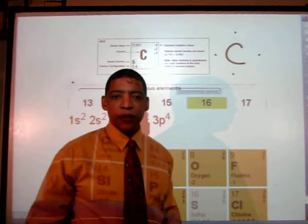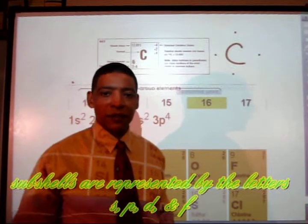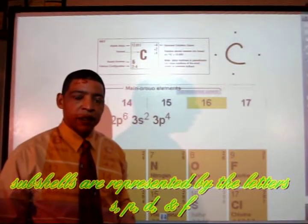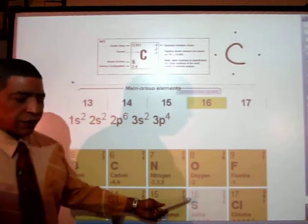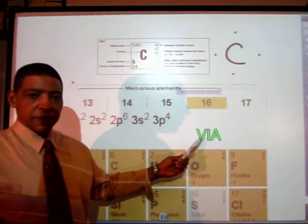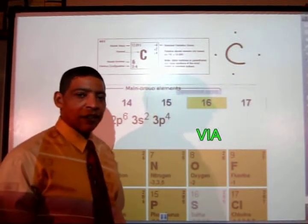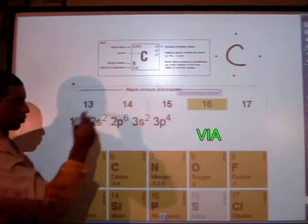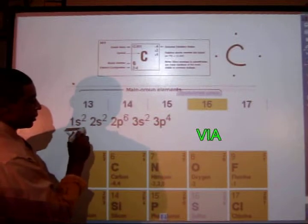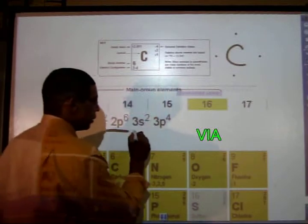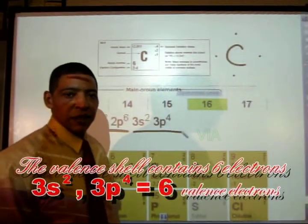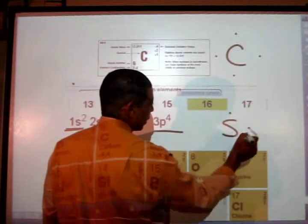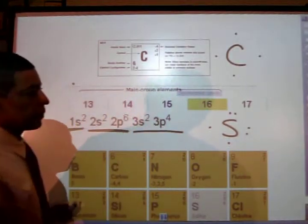However, what if the electron configuration written on your periodic table also includes the subshells? For example, 1s2, 2s2, 2p6, 3s2, and 3p4 represents sulfur. Sulfur is S, found in group 6. To determine the number of dots, the entire shell must be added up. The first shell has 2 electrons, the second shell has 8 electrons, and for sulfur the third shell has 6 electrons — so sulfur has 6 valence electrons. To write the Lewis dot symbol for sulfur, simply write an S surrounded by 6 dots.